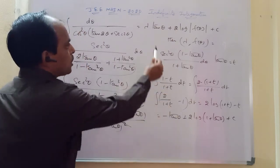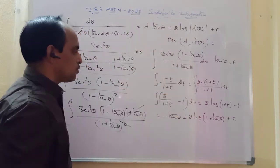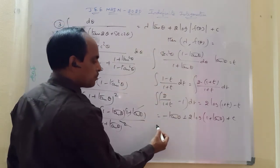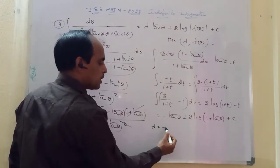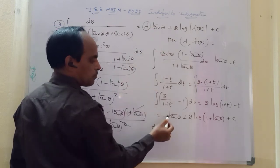Comparing with the given expression involving λ tan θ and 2 log f(θ): the coefficient of tan θ is −1, so λ = −1.